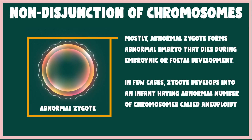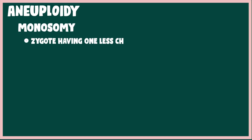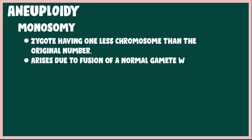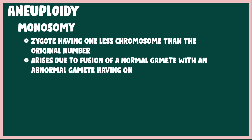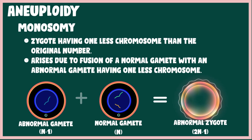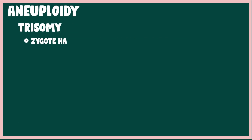Depending on the type of gametes involved in fertilization, aneuploidy can be divided into two main types. The first is monosomy, which represents a zygote having one less chromosome than the normal number, resulting from the fusion of a normal gamete with an abnormal gamete having one less chromosome. The monosomic condition represents the presence of only a single copy of a particular chromosome in a diploid cell.